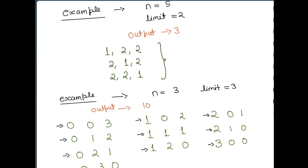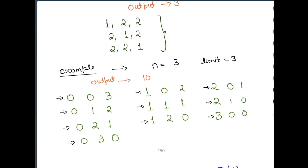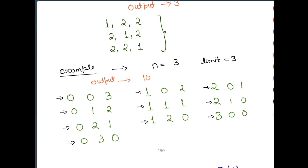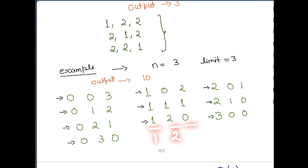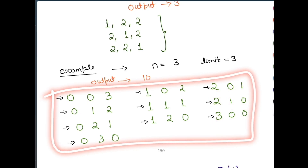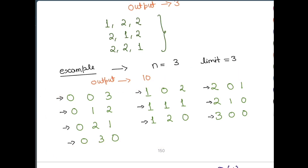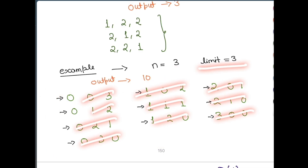Let us see another example where n is 3 and limit is 3. So we can give a maximum of three candies to one child. The output in this case is going to be 10. The ways are: (0,0,3), (0,1,2), (0,2,1), (0,3,0), (1,0,2), (1,1,1), (1,2,0), (2,0,1), (2,1,0), and (3,0,0). So there are 10 total ways to distribute three candies among three children with the limit as three.